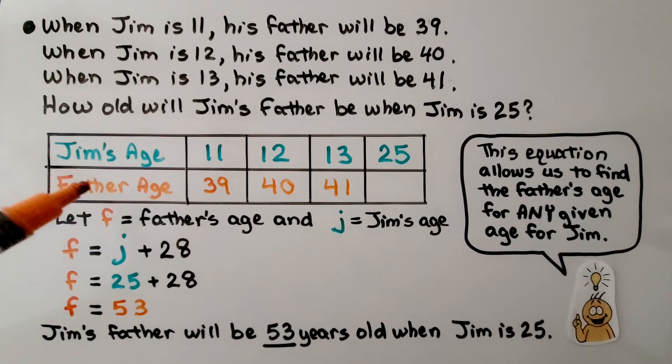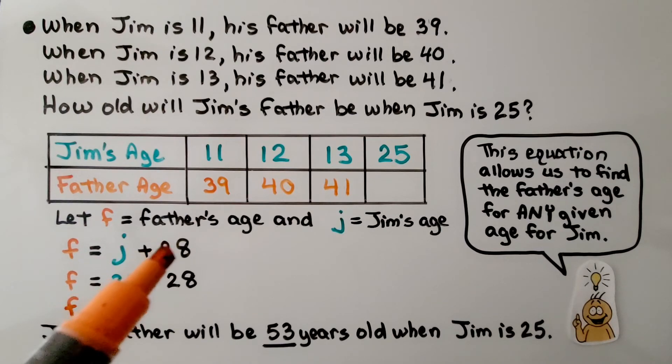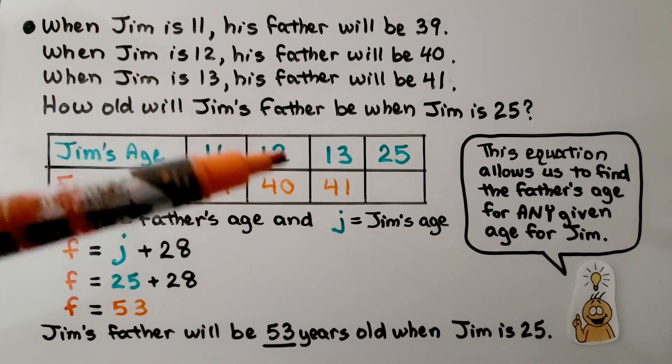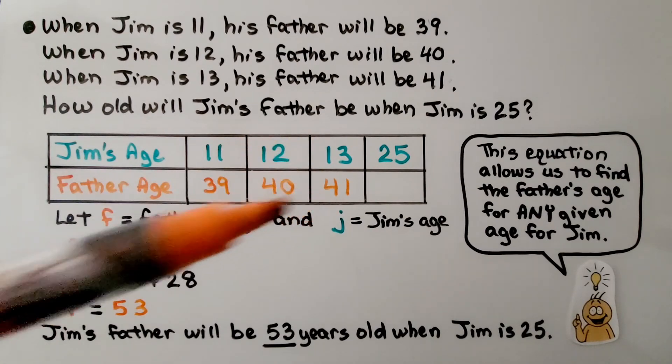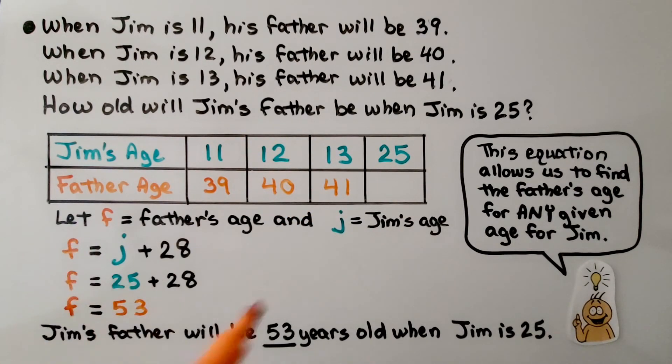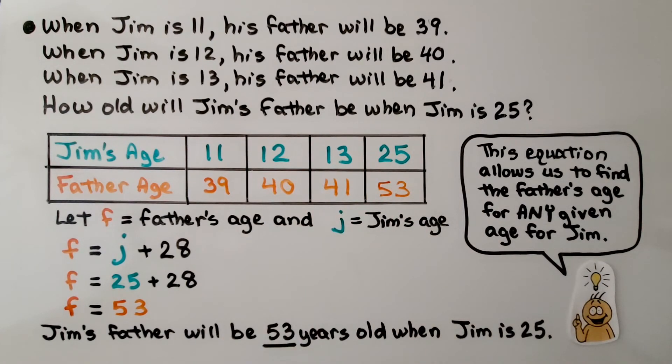We're going to let F equal the father's age and J equal Jim's age. We're going to do this as F for the father's age equals J, Jim's age, plus 28. We see there's a difference of 28 between each of these values. 11 plus 28 is 39, 12 plus 28 is 40, 13 plus 28 is 41. That means if we substitute 25 for J, we get that the father's age equals 25 plus 28. We know the father will be 53. Jim's father will be 53 years old when Jim is 25, and this equation allows us to find the father's age for any given age for Jim.